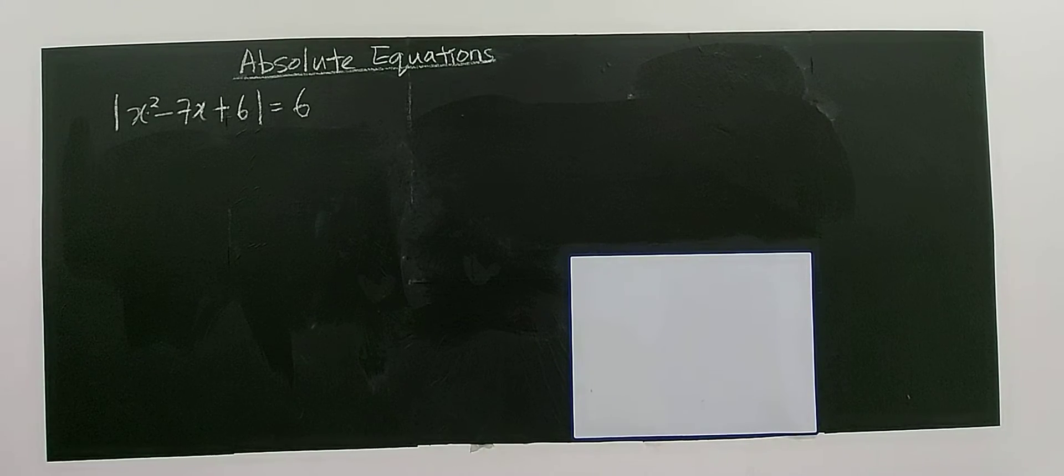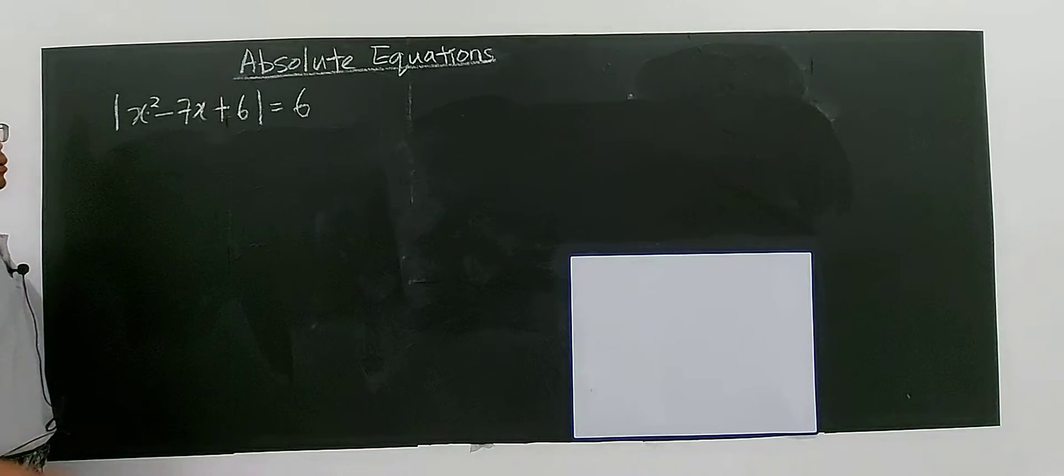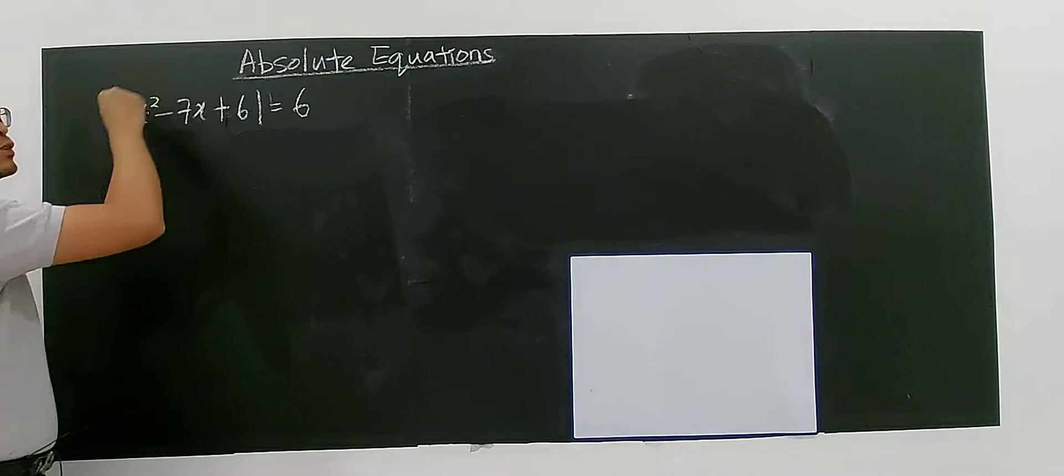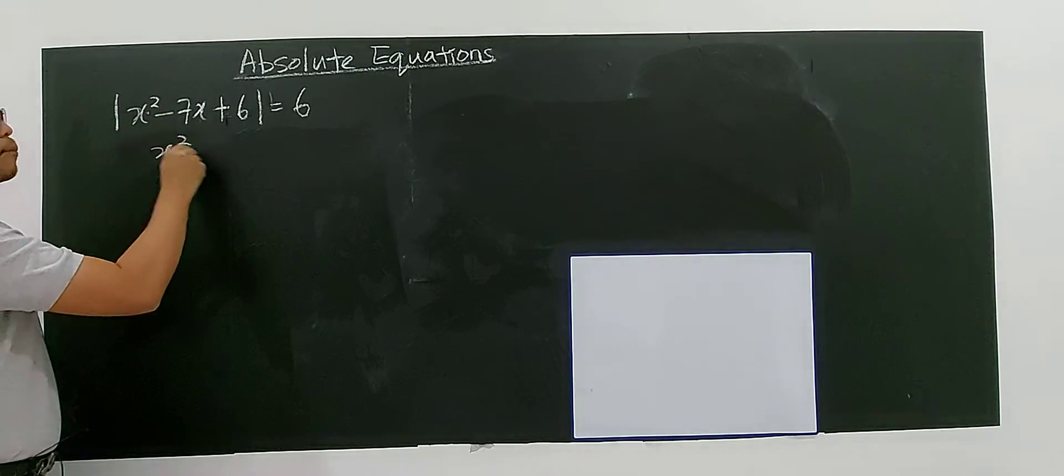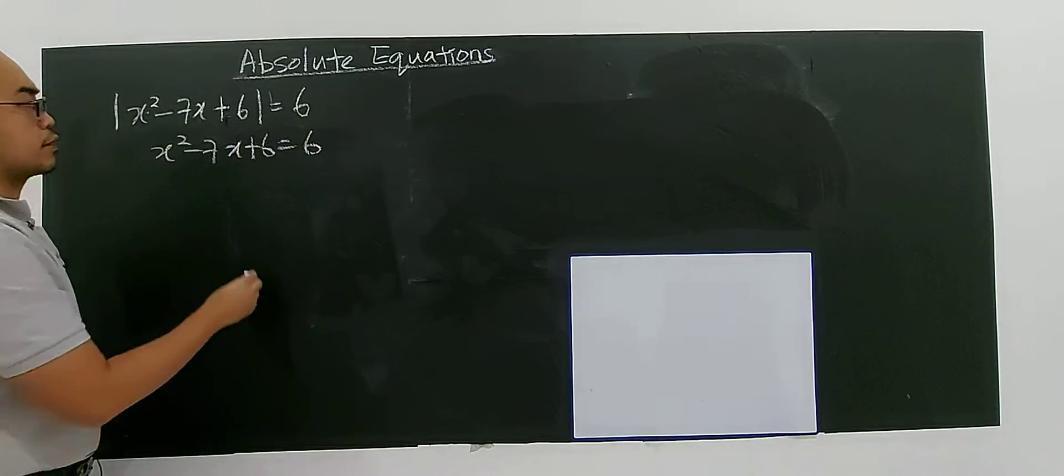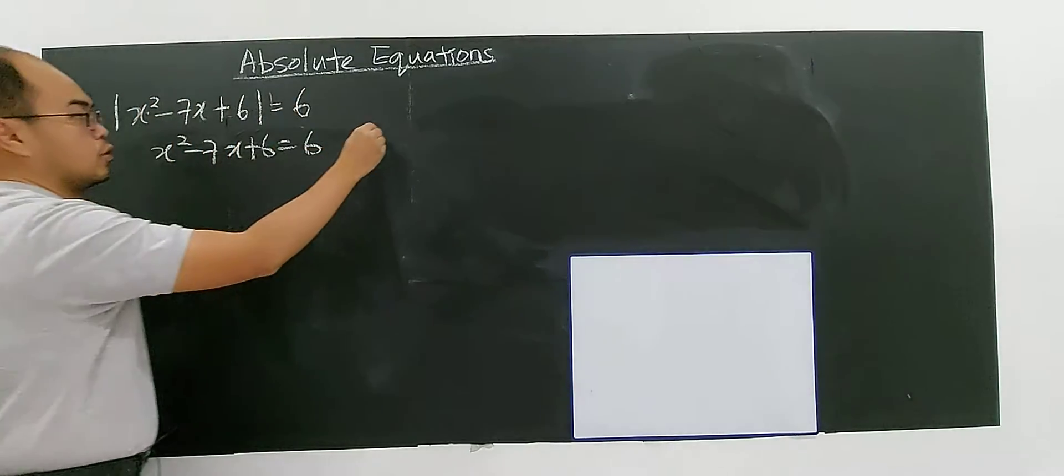Hello. Let's move on to solve this absolute value equation. So modulus of a function gives you six. This function may be six, right? Modulus of six gives you six. Or it may be negative six.